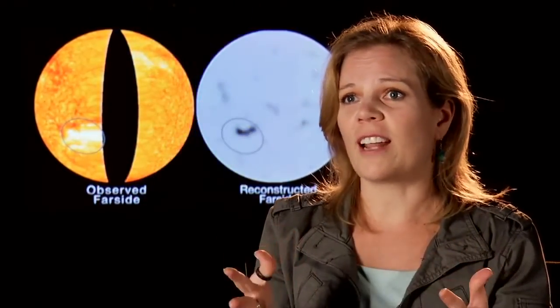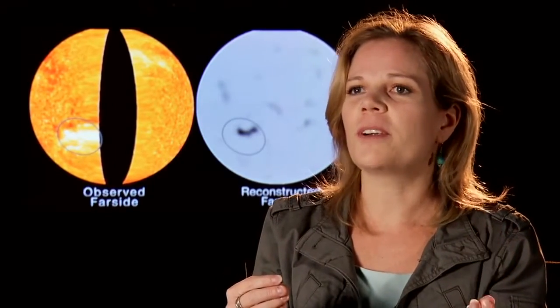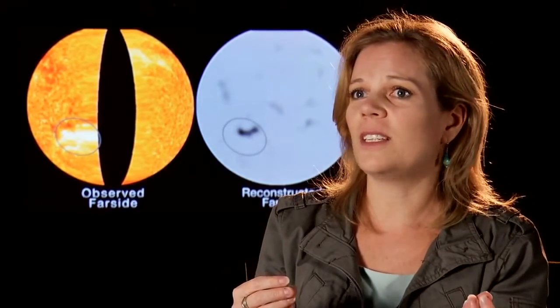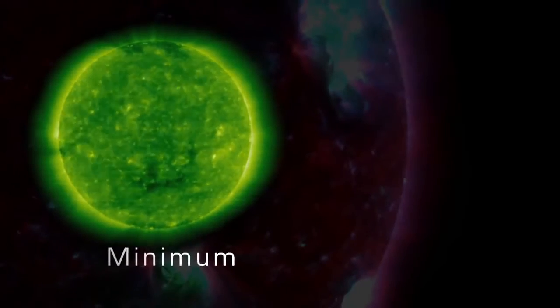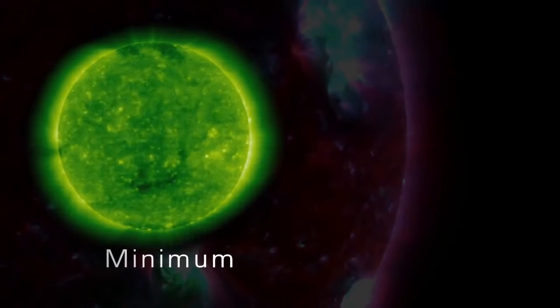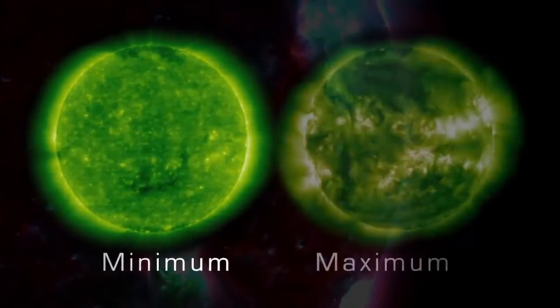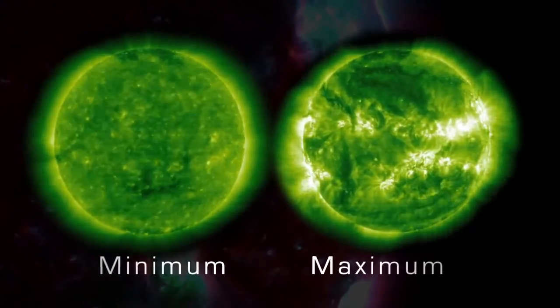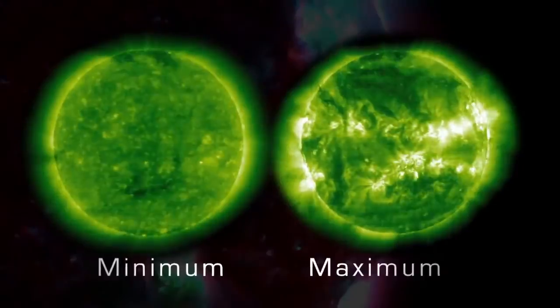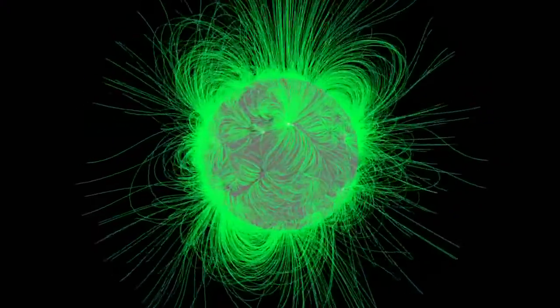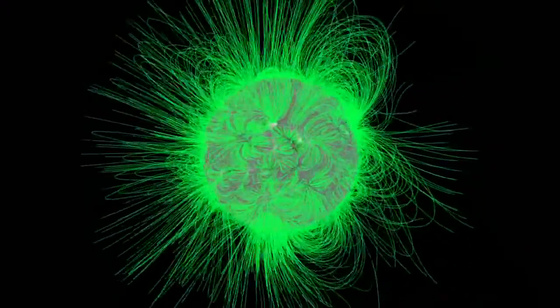The Sun goes through what we call a solar activity cycle, where every 11 years on average it will go from a very low period of solar activity — meaning sunspots and solar storms — to another period of low activity, and in between it goes through what we call solar maximum. At solar maximum, the Sun has a very complicated magnetic field structure, and therefore it creates a lot more sunspots and a lot more solar storms like flares and CMEs.